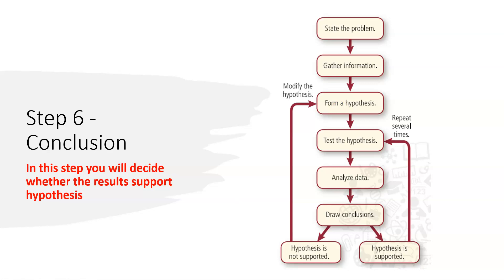These are the six steps of the scientific method. Step one: state the problem — decide what problem you want to solve. Step two: gather information — conduct research to collect all information about the problem and check if any other scientist has done this experiment. Step three: form a hypothesis — predict what will be the result of the experiment. Step four: test the hypothesis — actually conduct the experiment. Step five: analyze data — analyze the result of your experiment. Step six: draw conclusions based on your analyzed data.